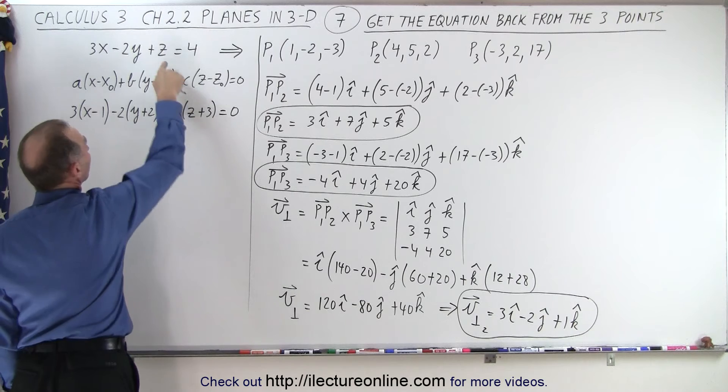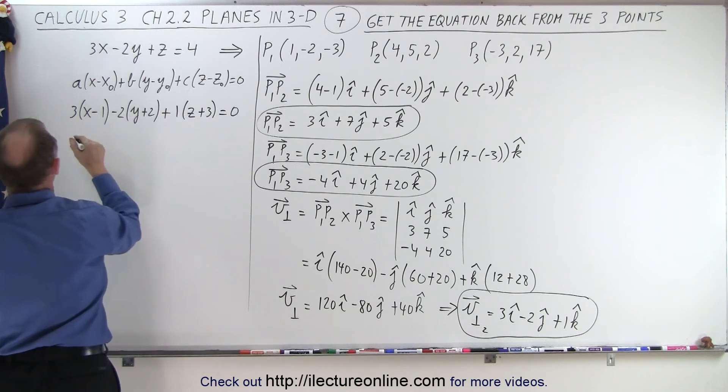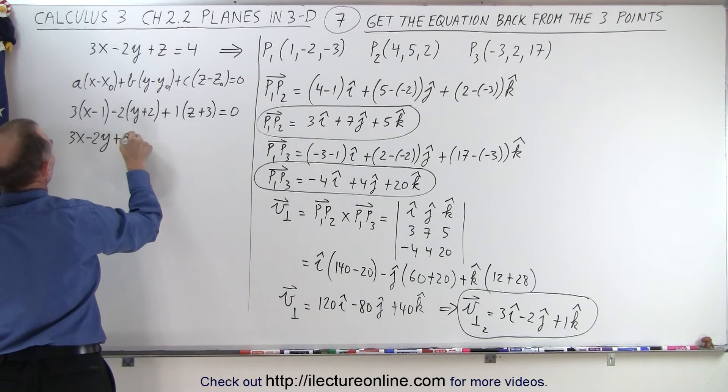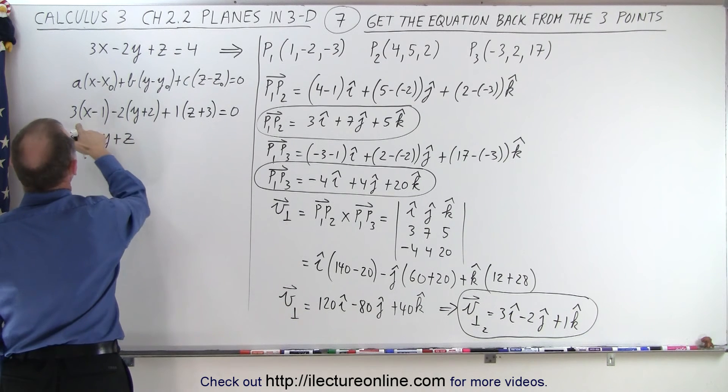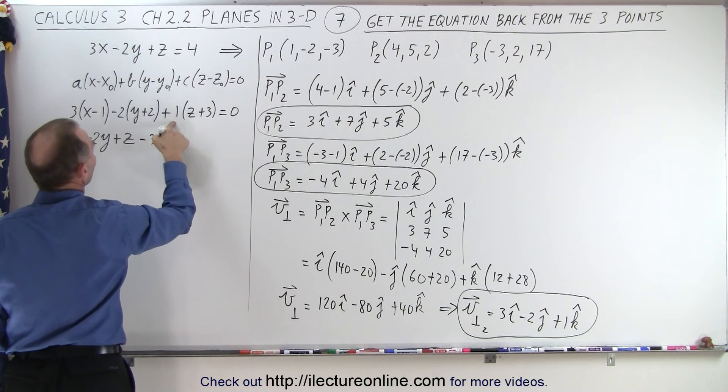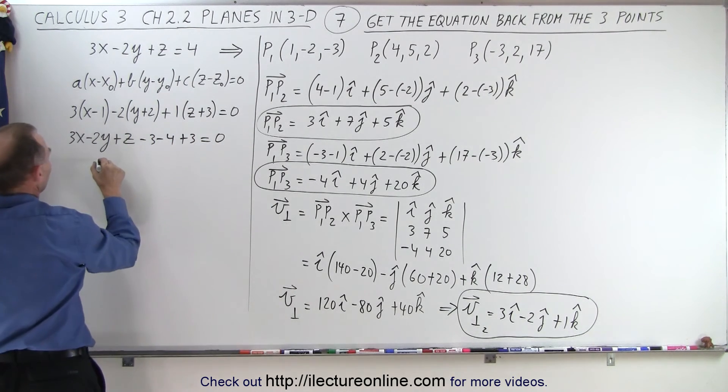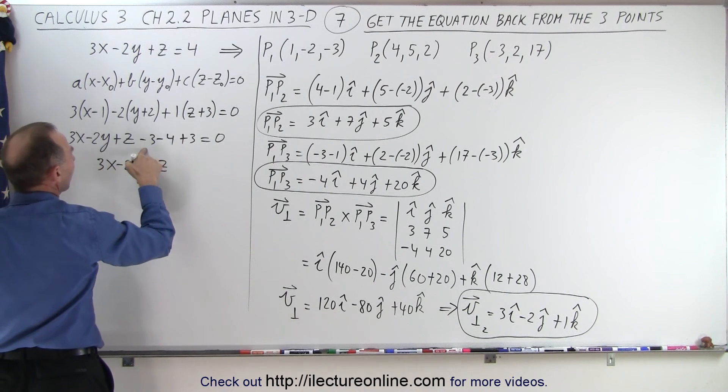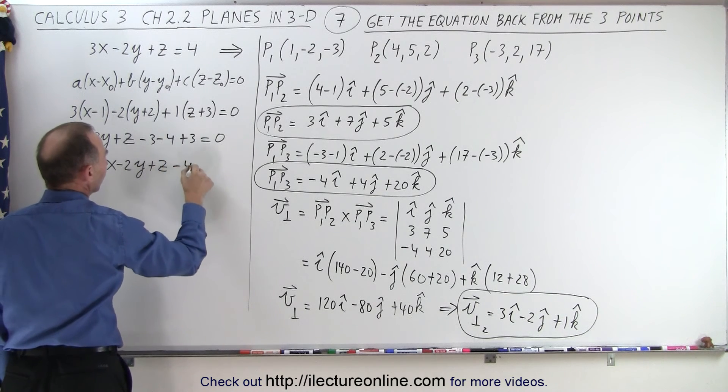Notice that this should equal this if we did everything correctly, that's what we're trying to see. So we get 3x minus 2y plus z, that's correct over here, and now we have minus 3, minus 2 times a plus 2, that would be minus 4, and 1 times 3, that would be plus 3, equals 0. So here we get 3x minus 2y plus z, minus 3, minus 4, equals 0.